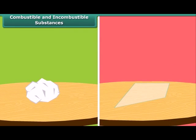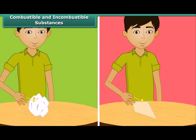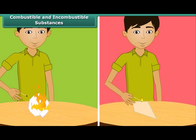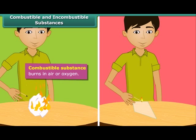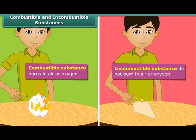There are two types of substances. Some substances catch fire and burn, while the other group does not catch fire. The boy is bringing a lighted matchstick close to paper and glass. Paper catches fire and so it is called a combustible substance. Glass does not burn, and such substances which cannot burn in air or oxygen are called incombustible substances.